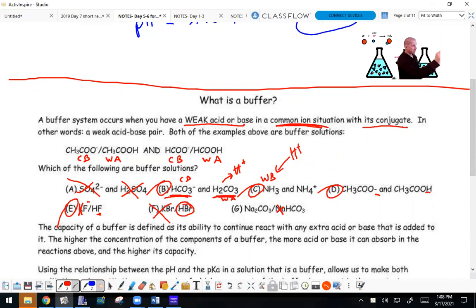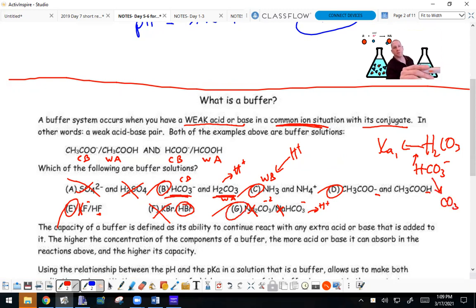Get rid of the sodiums and you have CO3^2- and HCO3-. How does HCO3- become CO3^2-? It loses a hydrogen, so this is a weak acid - the second ionization of H2CO3. This one can act as an acid or a base because it can accept or lose a hydrogen to become CO3^2-. So yes, that is a buffer solution.